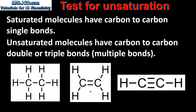In the middle we have the full structural formula of C2H4, which is ethene. Ethene has a carbon to carbon double bond, therefore it is an unsaturated molecule. On the right we have the full structural formula of C2H2, which is ethyne. Ethyne has a carbon to carbon triple bond, therefore it is an unsaturated molecule.